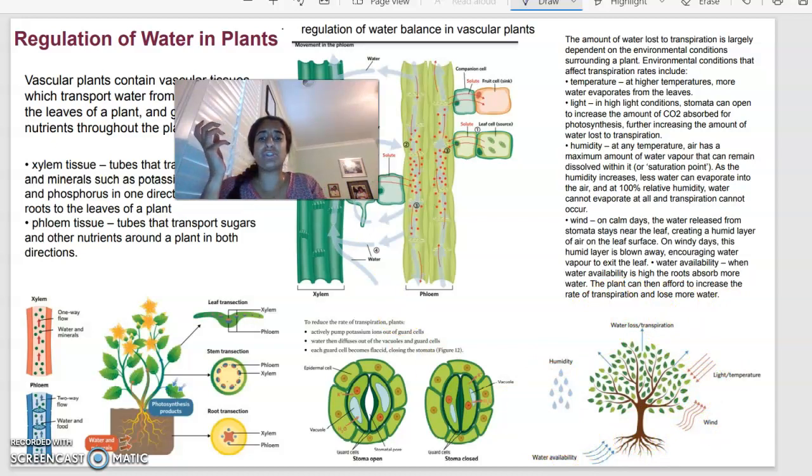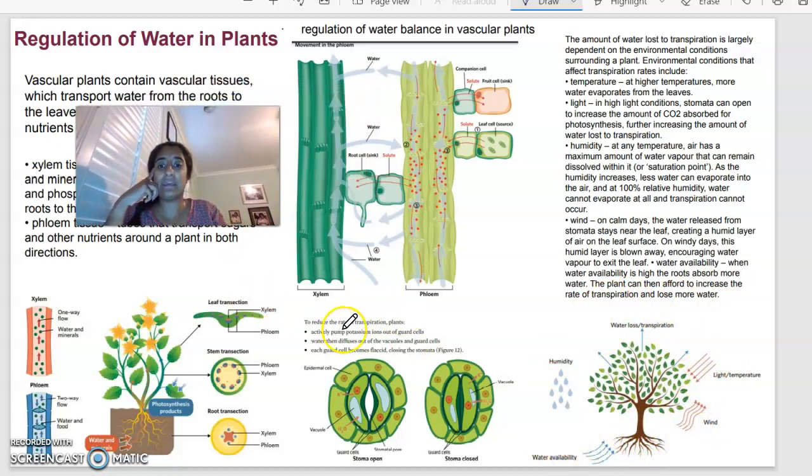In order to reduce the amount of transpiration that's happening, what the plant can do is it can actively pump potassium ions out of the guard cells that exist. The water can also diffuse out of the vacuoles in the guard cells, and each guard cell can also become more flaccid, closing the stomata. As you can see, the difference between the stomata being open and the stomata being closed.